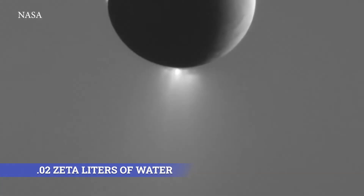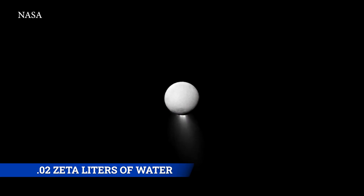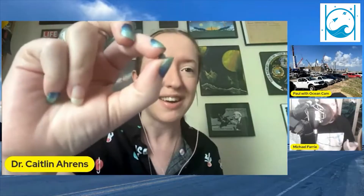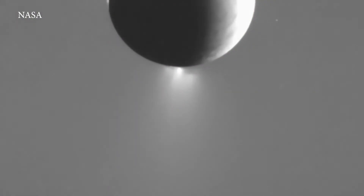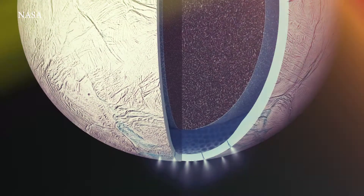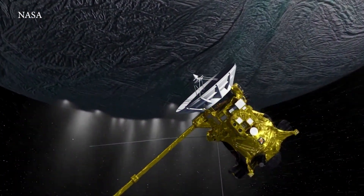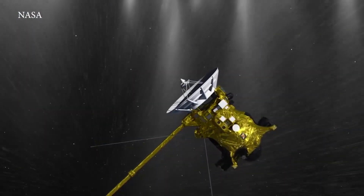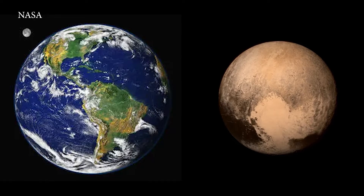Enceladus has about 0.02 zeta liters — a zeta liter being a one with 21 zeros, by the way — so 0.02 is about the size of this little bead. All that water, and you see these beautiful pictures of Enceladus with the water vapors just vaporizing up into its atmosphere.